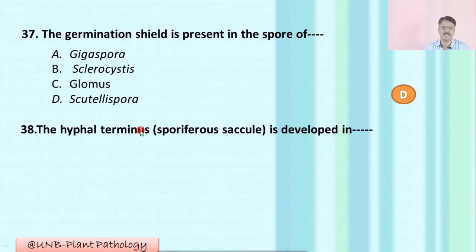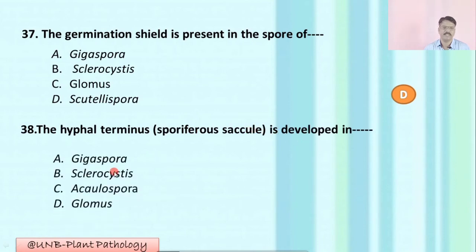Question number thirty-eight: The hyphal terminus, called the spore of mycorrhizae, is developed in which genera of mycorrhizal fungi? A: Gigaspora; B: Sclerocystis; C: Acaulospora; D: Glomus. The correct option is C: Acaulospora.